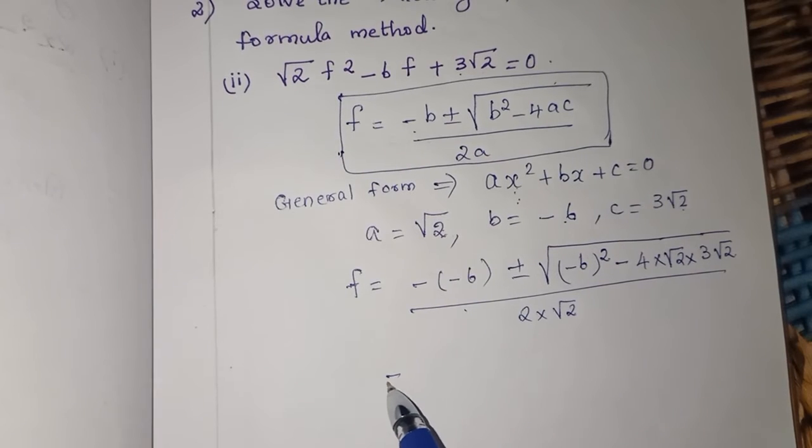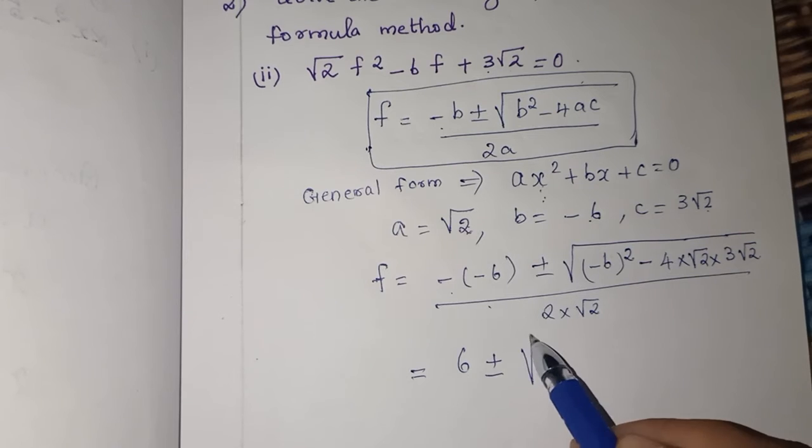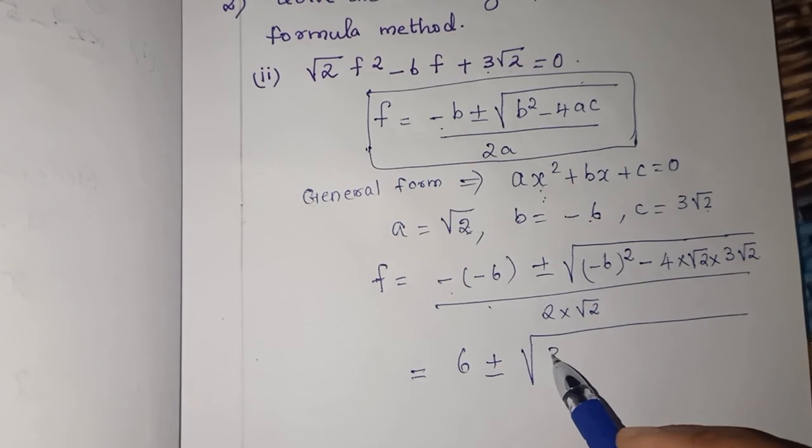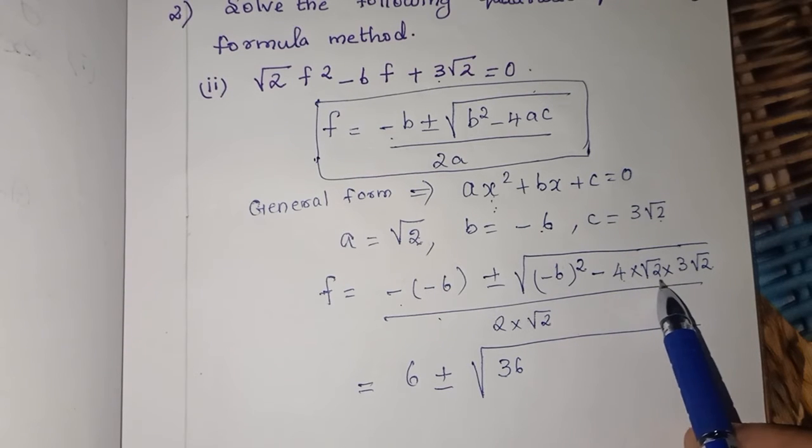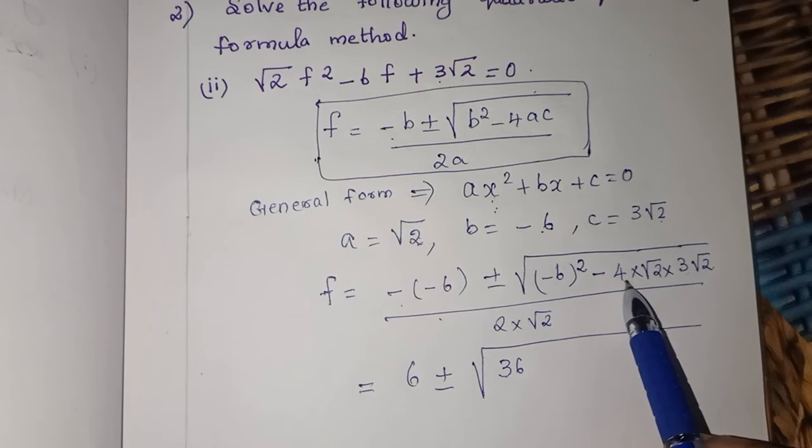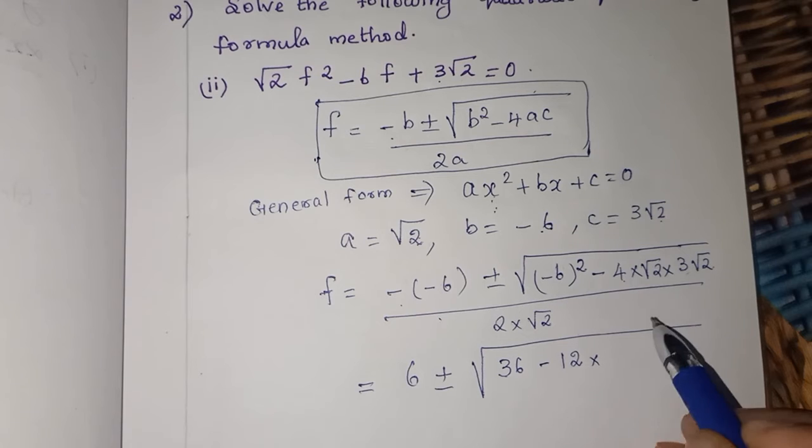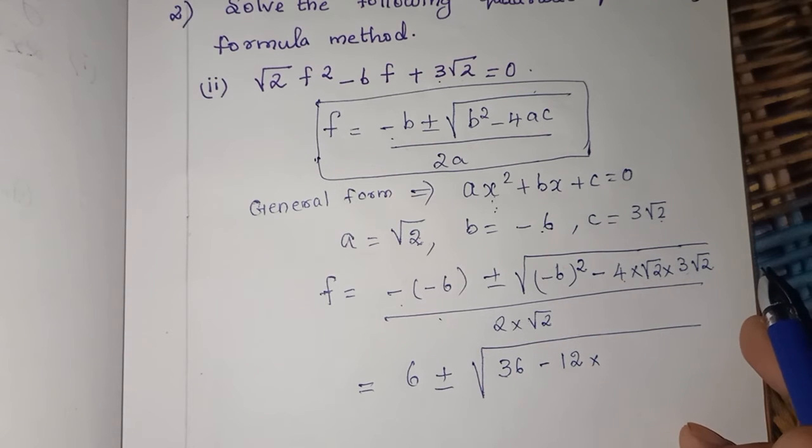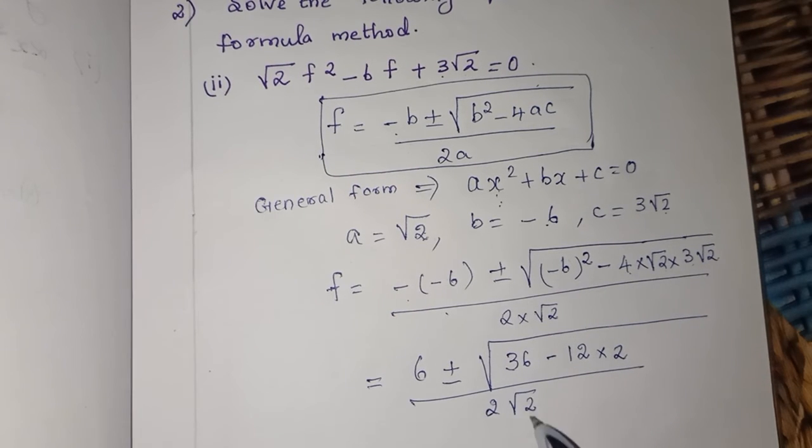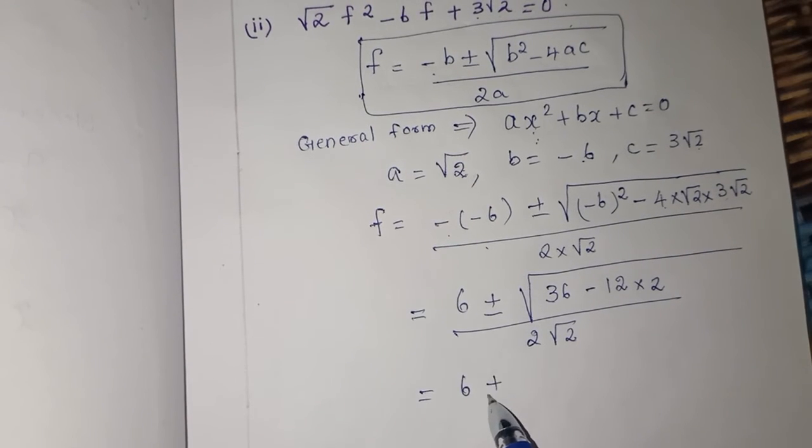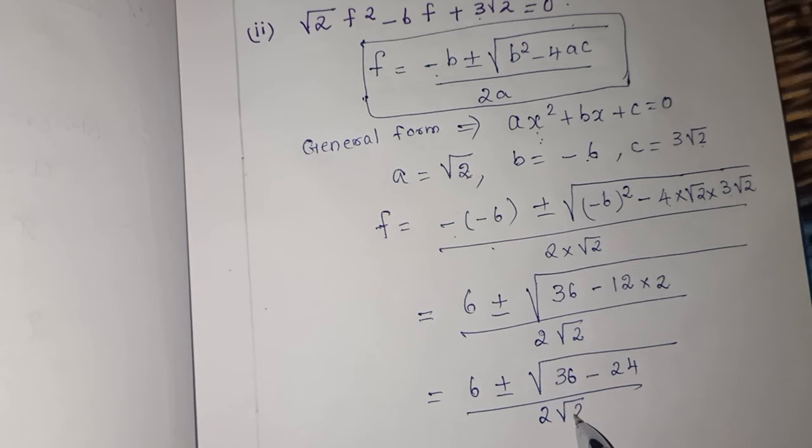Yes, divided by 2√2. Carefully apply the values. Minus of -6 becomes +6 ± √((-6)² minus... This is 4 × √2 × 3 × √2. First multiply the numbers. 4 × 3 is 12. 12 into √2 × √2 is 2. Divided by 2√2.